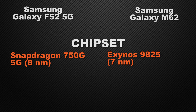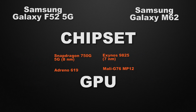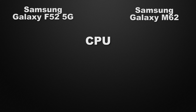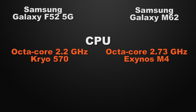The winner in processor is M62 because it has a slightly faster processing speed. About the GPU, the F52 is packed with the Adreno 619, whereas the M62 is packed with the Mali-G76. So the winner here is the M62 because it can give you more FPS in games. Talking about clock speed, the F52 can clock at 2.2GHz on an octa-core chipset, whereas the M62 can clock at 2.73GHz on an octa-core chipset. So the winner here is the M62 because it has faster clock speed.